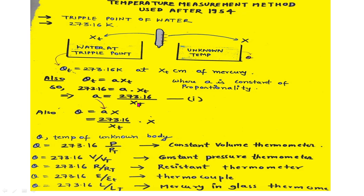To find the temperature of an unknown body, place the thermometer in contact with that unknown body or unknown fluid, as shown here. Measure the level of mercury in the thermometer after placing it in the unknown fluid. Let the mercury reading after placing the thermometer in the unknown fluid be x centimeters.